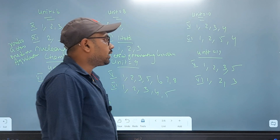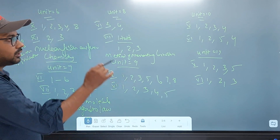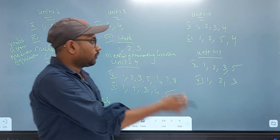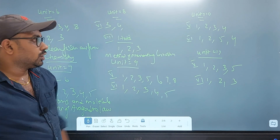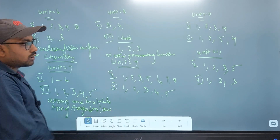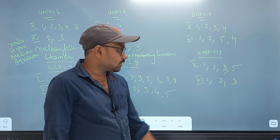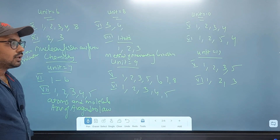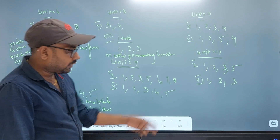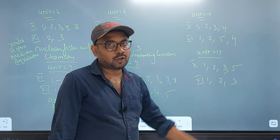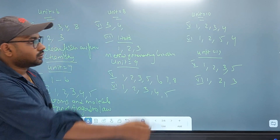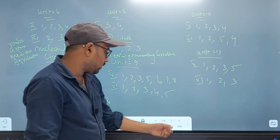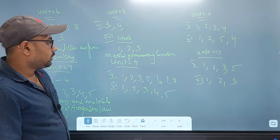Unit 10: 1, 2, 4 — 4 mark, 7 mark, 2 mark. Unit 11 is a very important unit — soap detergent, homologous series. IUPAC name: 1, 2, 3, 5 — 2 mark: 1, 2, 3 — 4 mark. This is chemistry.